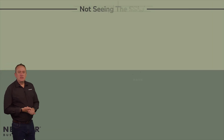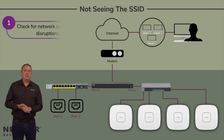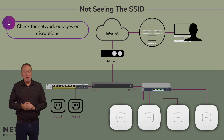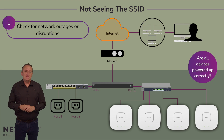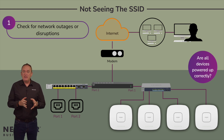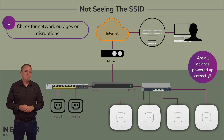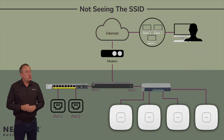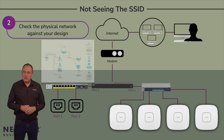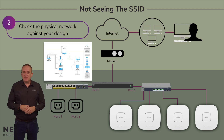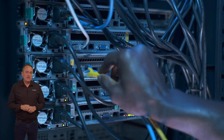The first thing to check for are any network outages or disruptions which might be causing problems with roaming. Is the internet working correctly? And are all devices powered up correctly? These really are the first things to check with any kind of network troubleshooting. Secondly, check the physical network is configured as per your design, because someone may have had their little hands all over it.